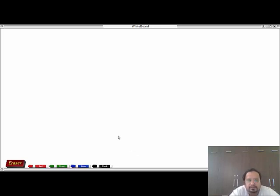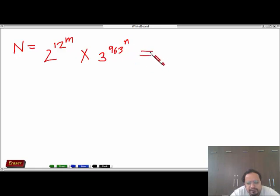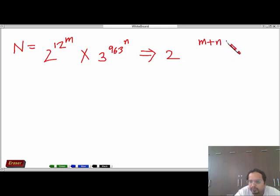Hello everyone. This is a good exam level question. N is equal to 2 to the power 12 to the power m, and you are multiplying it with 3 to the power 963 to the power small n. And it is given that the last digit of this expression is 2. And you have to judge the nature of m plus n, whether it will be odd, it will be even, or whether we cannot determine it.